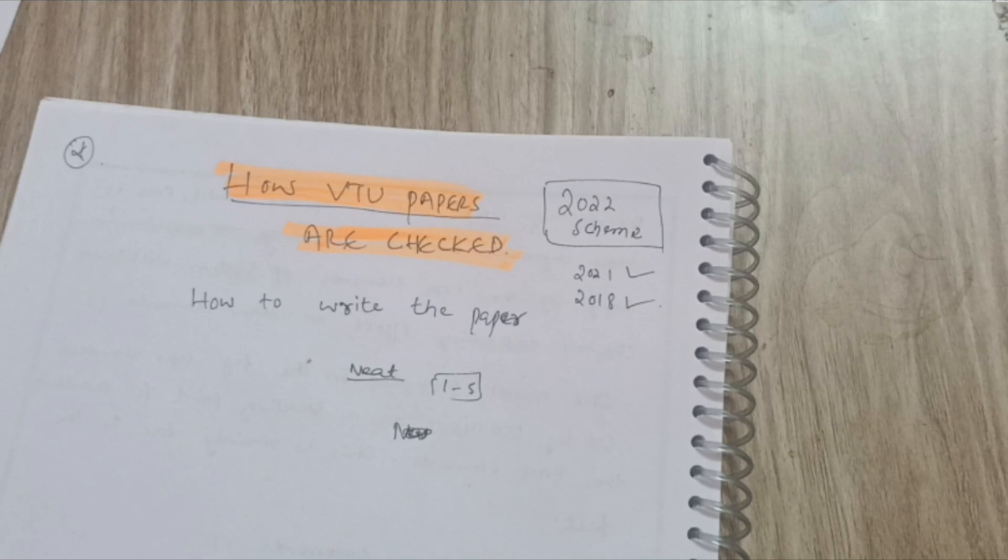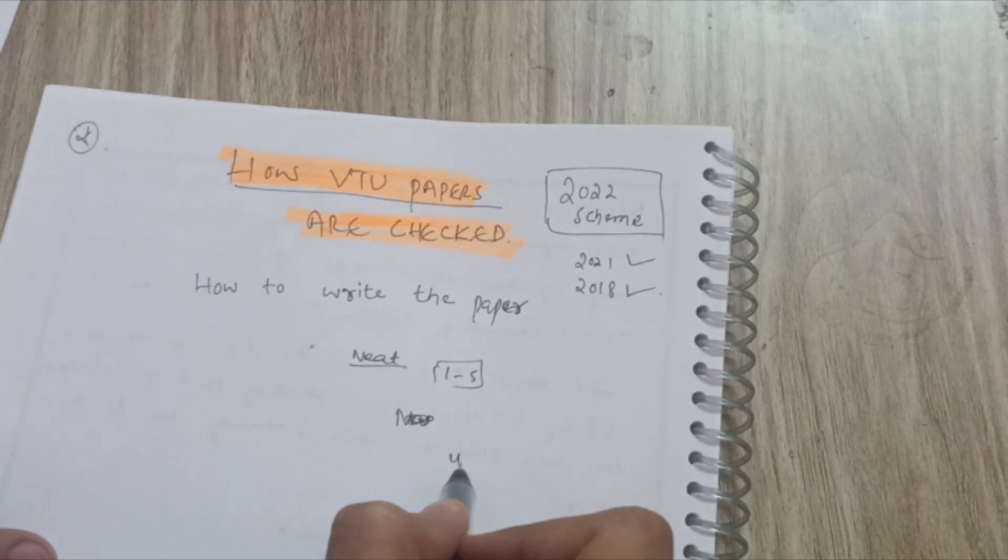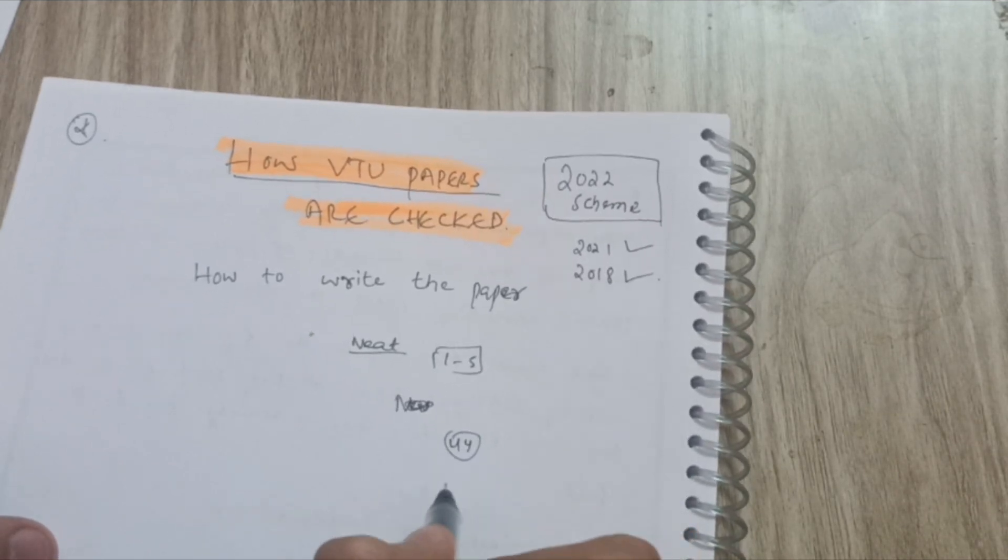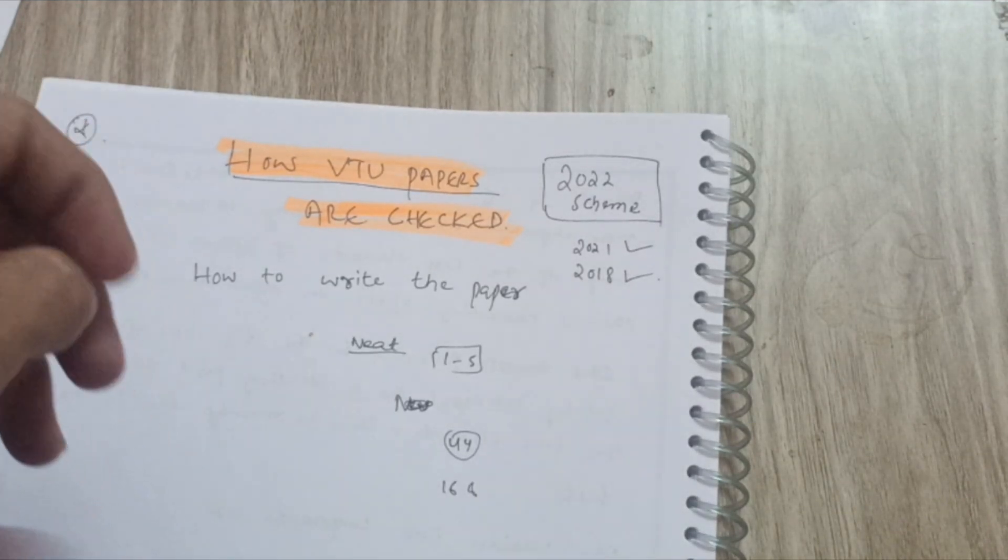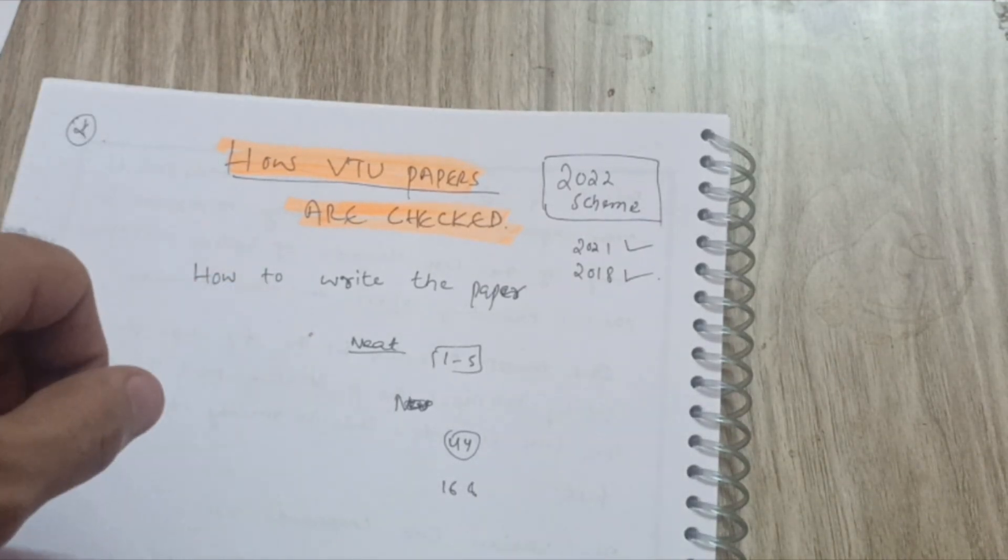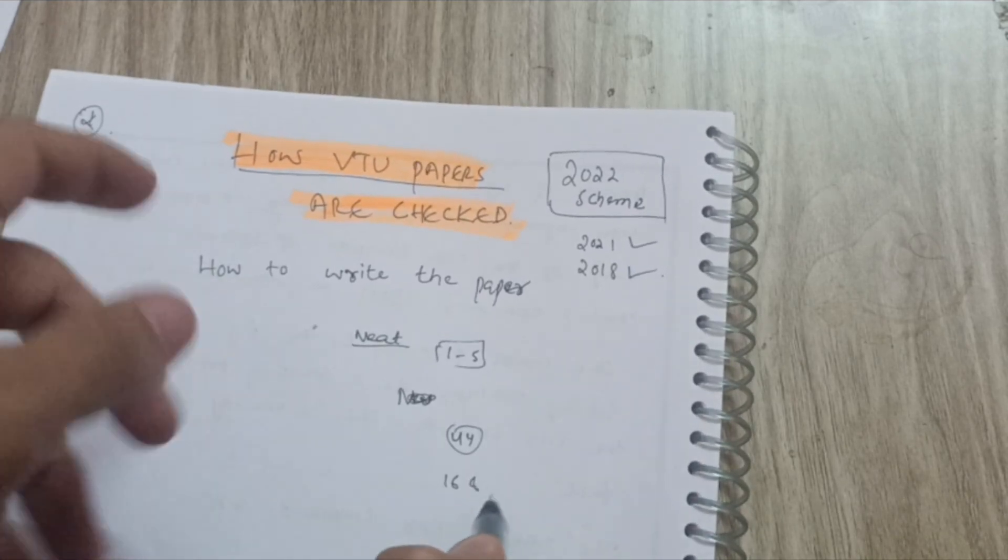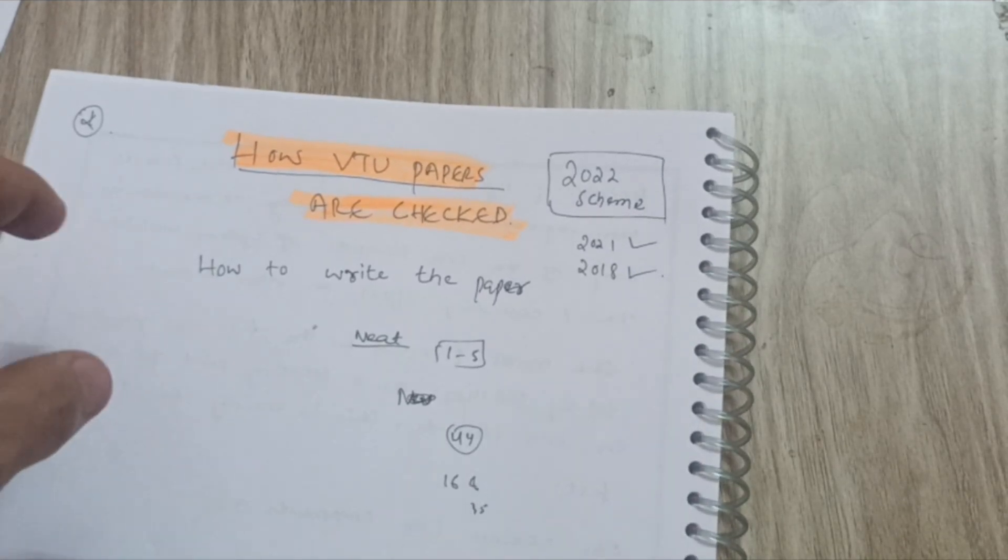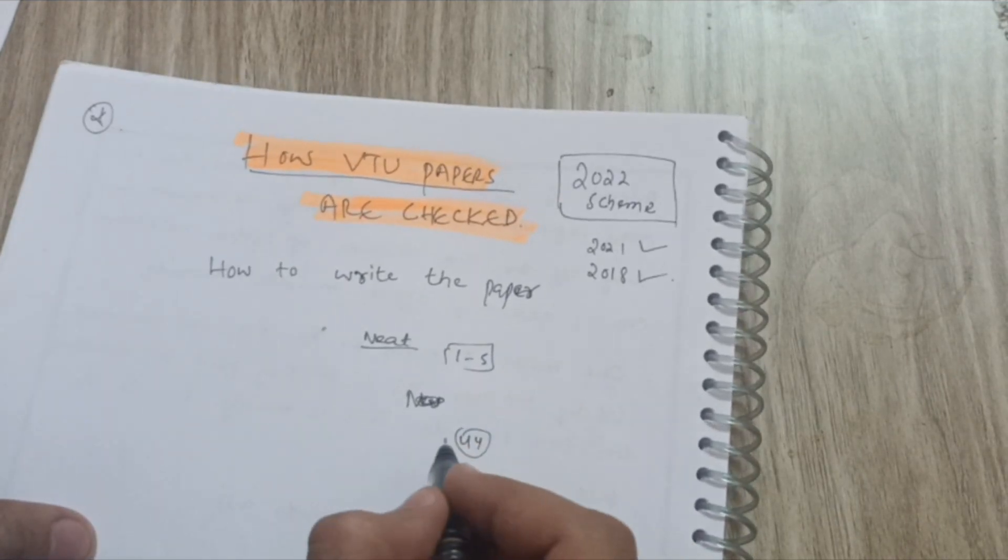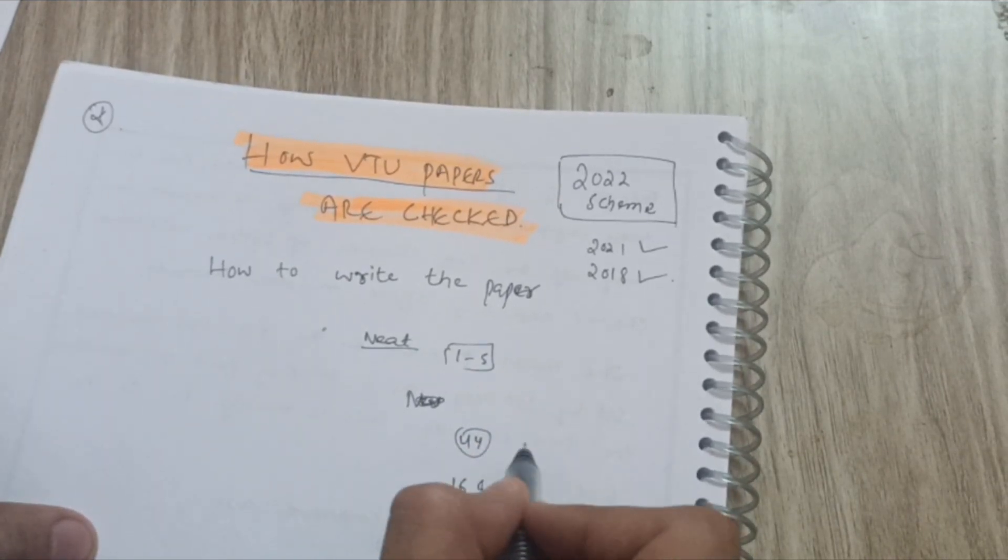If you write only 16 pages, that doesn't matter in the VTU examination. Suppose it is 44 pages in the booklet, if you write only 16, 17, or 18 pages, but that should be sufficient. You should have some technical knowledge which you put forth in the paper. Sometimes students are writing more than 35 pages, that is quantity, but quality also matters in the VTU paper.